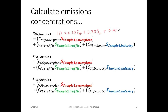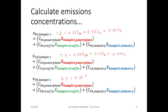We multiply that by the emission concentration from the industry (S_I). We do the same for the other two elements. For cadmium: 7.5 equals 0.5 multiplied by S_power plant, plus 0.10 multiplied by S_T, plus 0.4 multiplied by S_I. And for lead: 8.5 equals 0.5 multiplied by S_PP, plus 0.30 multiplied by S_T, plus 0.20 multiplied by S_I.